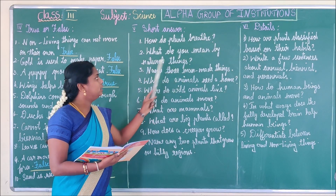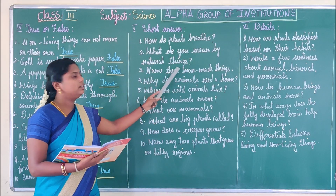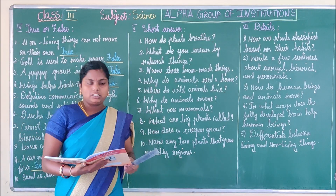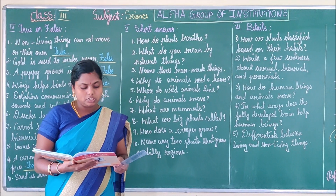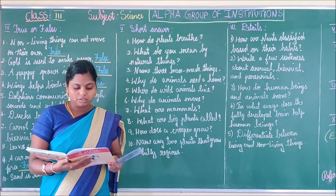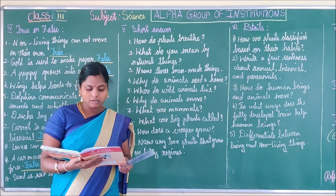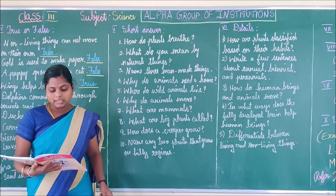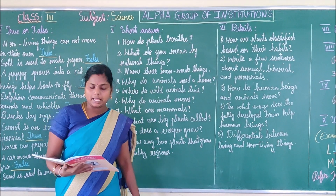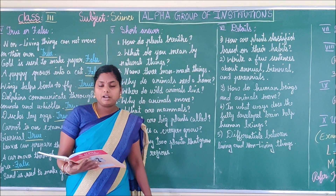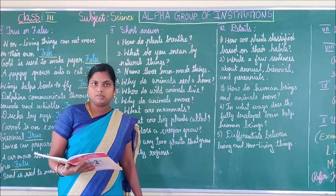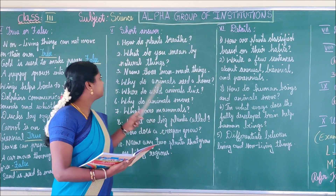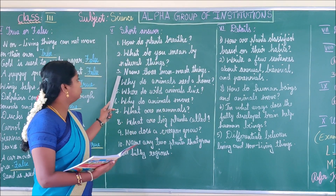Second question: What do you mean by natural things? Things that come directly from the natural world are called natural things.